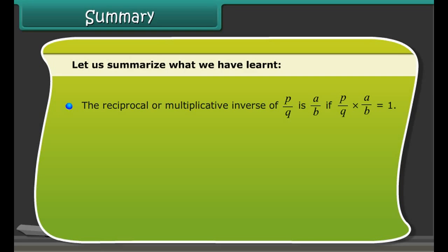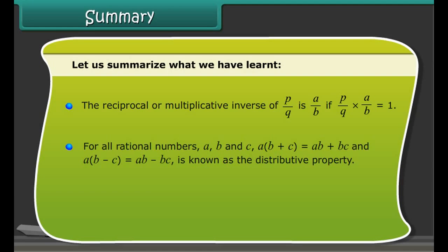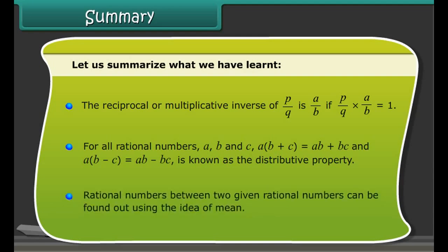Rational numbers are commutative and associative under addition and multiplication. Zero is the additive identity and one is the multiplicative identity for rational numbers. The additive inverse of p upon q is minus p upon q, and vice versa. The reciprocal or multiplicative inverse of p upon q is a upon b if (p upon q) × (a upon b) equals one. For all rational numbers a, b, and c: a × (b + c) = ab + ac, and a × (b − c) = ab − ac, which is known as the distributive property. Rational numbers between two given rational numbers can be found using the idea of mean.